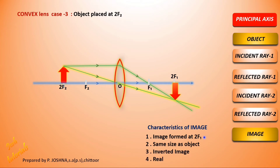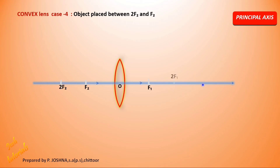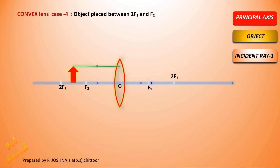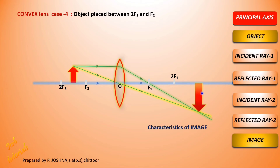Image formed at 2F1 — same size as the object, inverted, and real. Moving to Case 4: object placed between 2F2 and F2. Draw the principal axis with evenly marked points. The object is between the center of curvature and the focal point. The first incident ray is parallel to the principal axis and passes through the focus; the second passes through the optic center undeviated. The two rays meet beyond 2F1 — the image is magnified, inverted, and real.